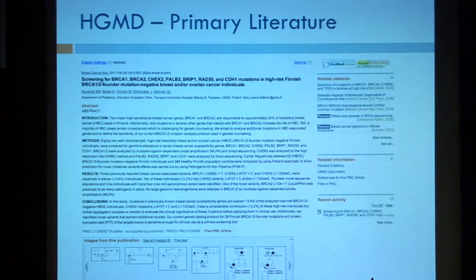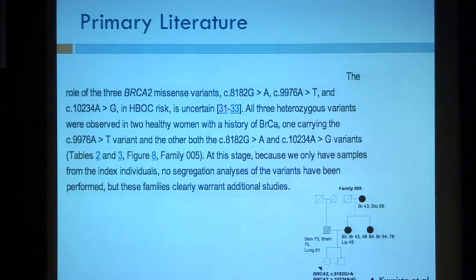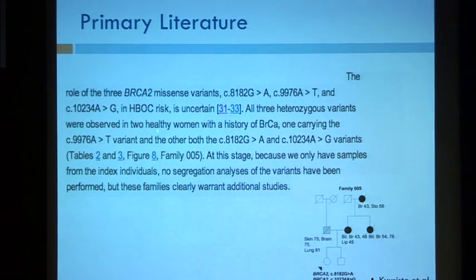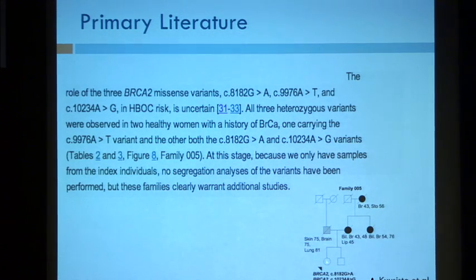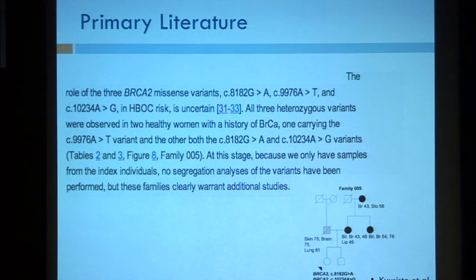Here's a primary literature example. HGMD links you out to this directly. We have a BRCA2 mutation, 8182 G-to-A in our cohort, listed as disease-causing in HGMD with no question mark after 'breast and ovarian cancer.' But the paper says all three heterozygous variants were observed in two healthy women with a family history of breast cancer. In HGMD the risk is listed as uncertain, and looking at the pedigree, there's one individual with the missense mutation who does not actually have breast cancer. Most of us would say there's no segregation data here — this is not obviously disease-causing. HGMD said it was, but you have to go out to the primary literature before you return anything.